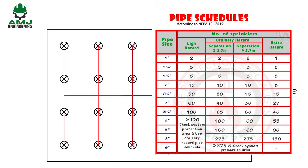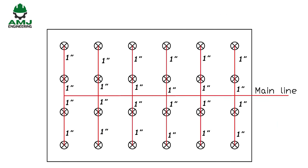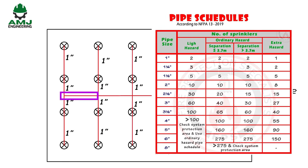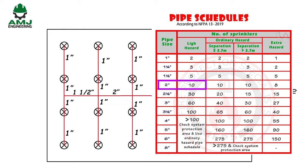Since our space is light hazard with no more than two sprinkler heads on each branch, the size of all branches is one inch. For the main line, always start from the end. The portion feeding four sprinkler heads should be one and a half inches. The portion feeding eight sprinkler heads should be two inches. All the rest are two and a half inches because the number of sprinkler heads is more than 10 and less than 30.